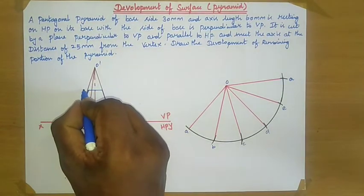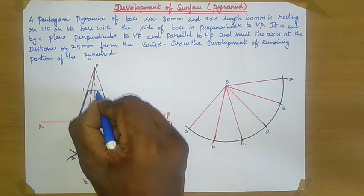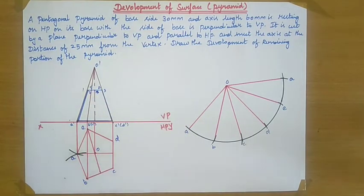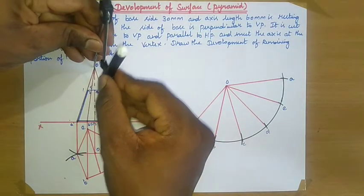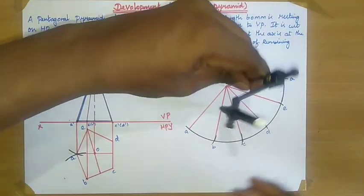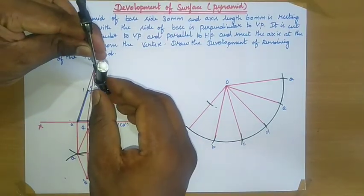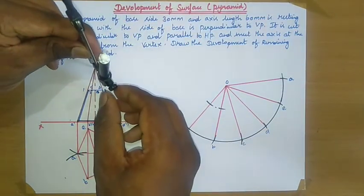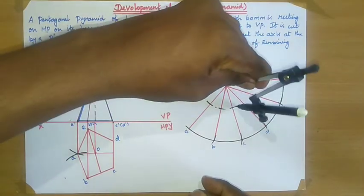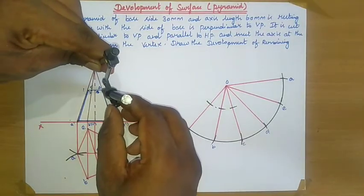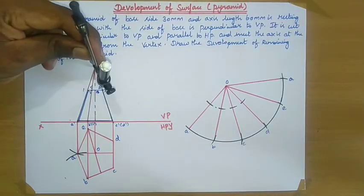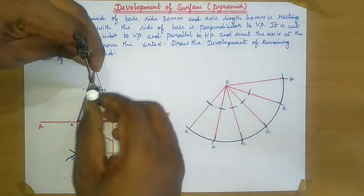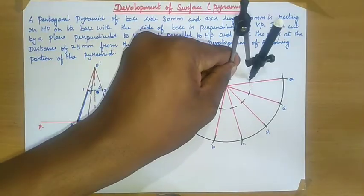Name these points on the cutting plane as 1, 2, 3, 4, and 5. Now take the measurement from O-dash to 1, with O as center cut an arc. Again take the measurement from O-dash to 2, with O as center cut an arc. From O-dash to 3, take the measurement with O as center cut an arc. From O-dash to 4, with O as center cut an arc. From O-dash to 5, with O as center cut an arc. From O-dash to 1 again, with O as center cut an arc.